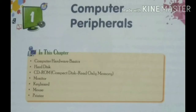Our first chapter is Computer Peripheral. Computer Peripheral means devices which we use in a computer. In this chapter we will discuss about computer hardware basics, hard disk, CD-ROM — that is Compact Disk Read-Only Memory — input devices such as keyboard, mouse, scanner, and output devices such as monitor, printer, and speaker. These are all the topics we will cover in this chapter.